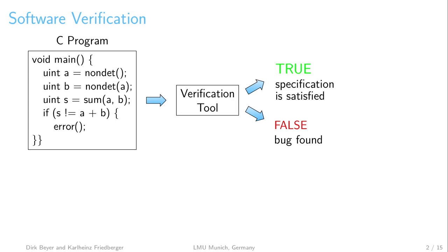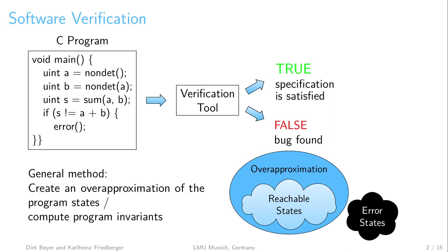Since several years, software verification has been successfully applied to improve the quality and reliability of computer programs. Starting with a C program and a specification like not reaching the function error, the verification tool provides a proof whether the specification is satisfied and returns true, or it returns false when a bug is found or a counter example trace can be confirmed. In general, the verification tool creates an over-approximation of the reachable program states and computes program invariants. The idea is that no error state is part of the reachable states or part of the over-approximation.